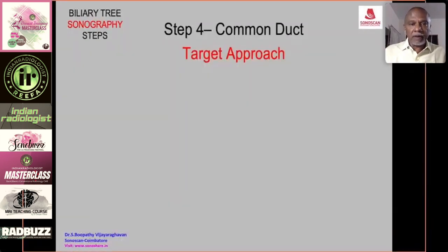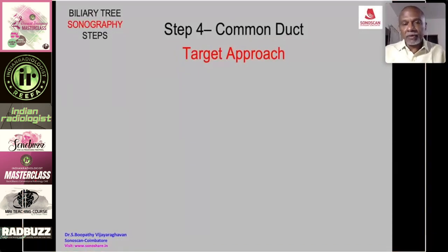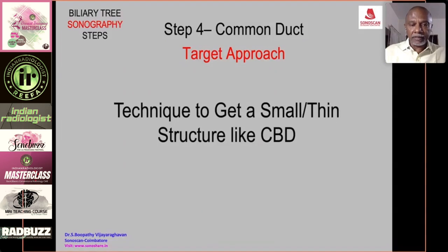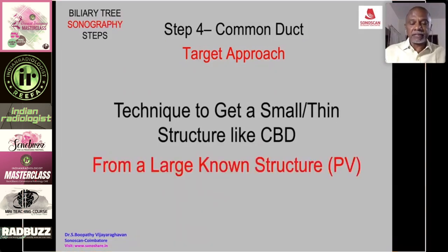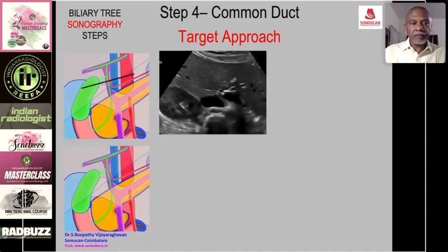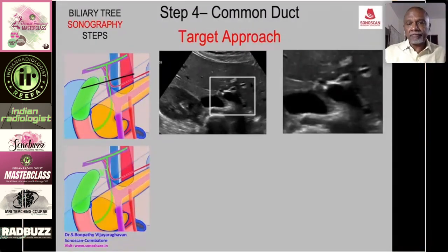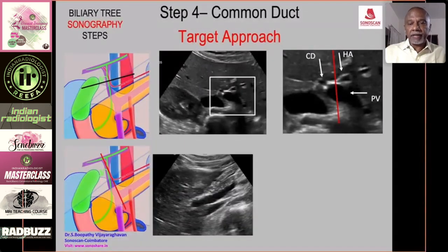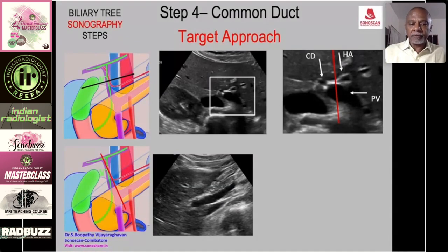Step four is the common duct. It will not be readily seen, so you use the target approach — a technique to identify a small or thin structure like the CBD from a large known structure, the portal vein. The anatomy shows that in transverse scan the portal vein is seen, with the hepatic artery cross-section anterior and to the left, and the common duct slightly to the right of the hepatic artery.